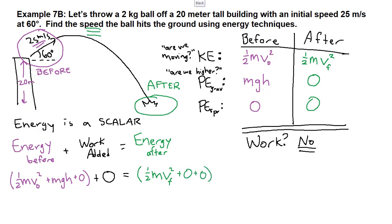Now we can plug in the things that we have. I didn't make a nice list of the given information, so I'll do it over here on the right side. The mass is two kilograms, the height is 20 meters, the initial speed is 25 meters per second. Remember that the speed is what the energy is looking for because energy is a scalar, so we don't want to break that up into components.